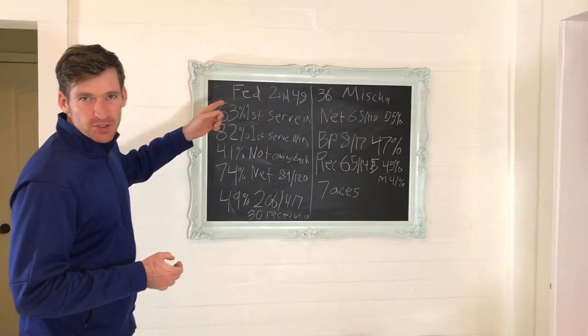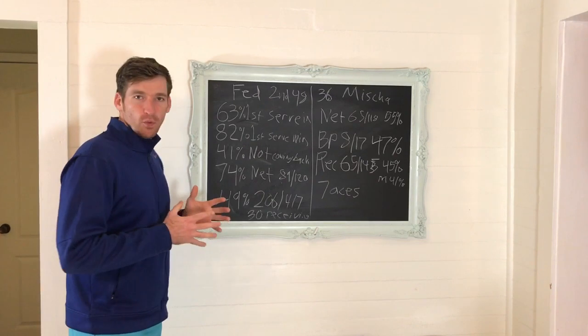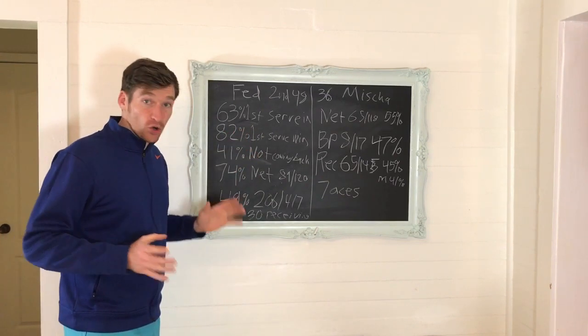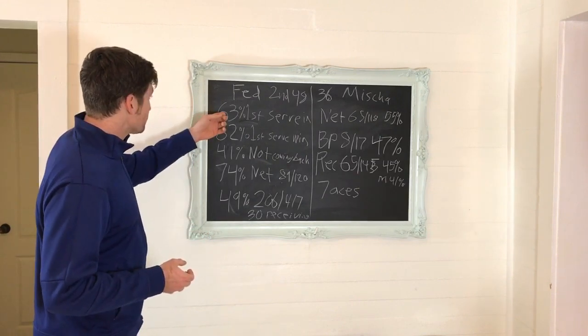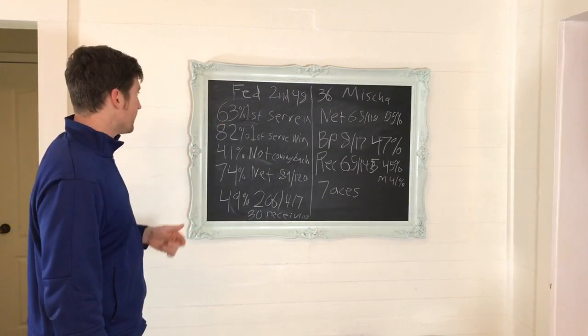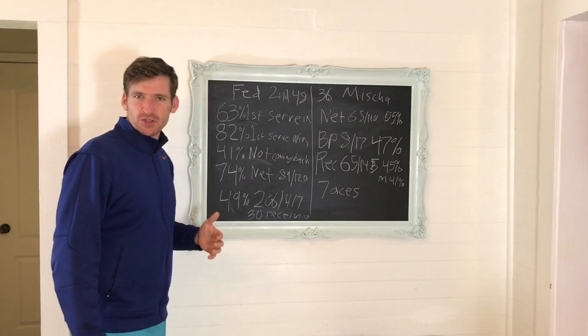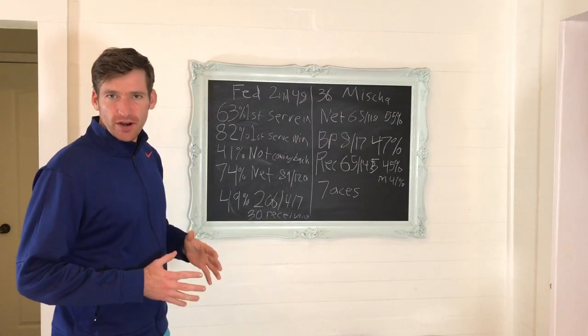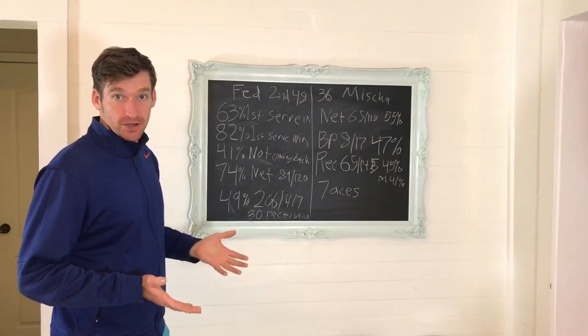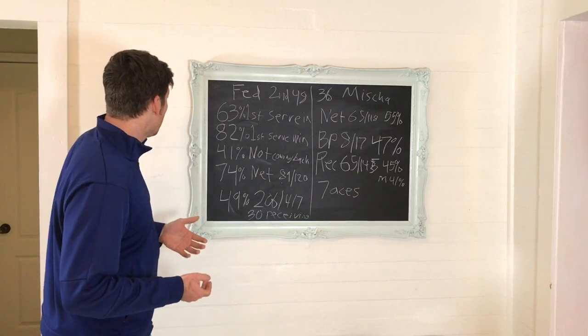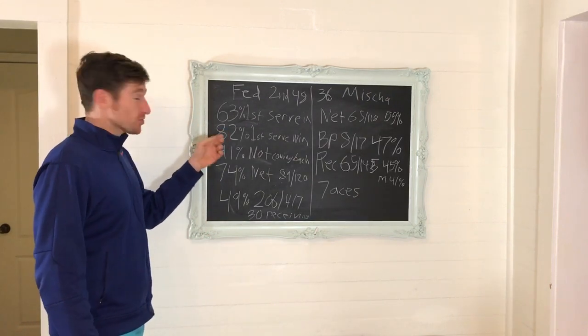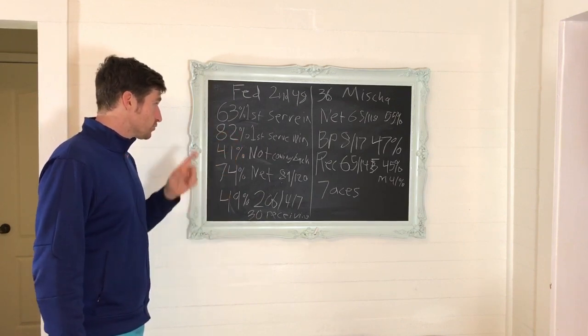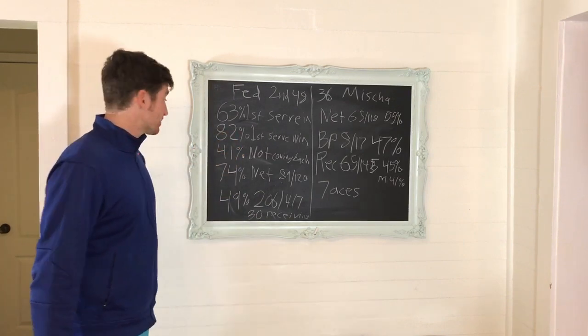Let's talk about how Federer's been serving. This is a key to him winning the match. It's key to him winning the whole tournament and it's looking good for Fed. 63% of his first serves are going in. That's higher, about two points higher than his career average first serve. Also, 82% of those first serves that go in, he's winning the point. That's pretty nice.